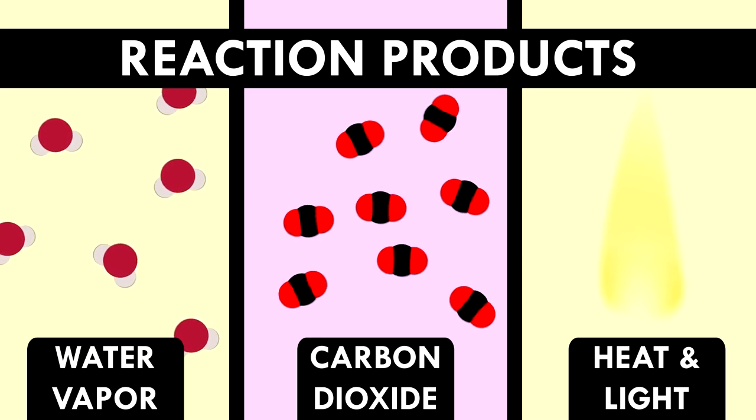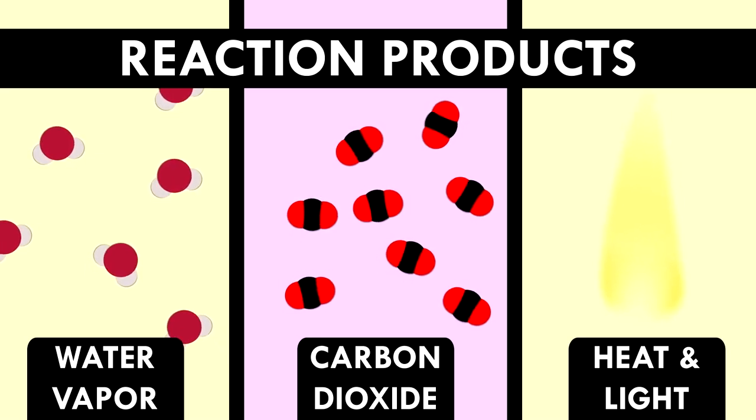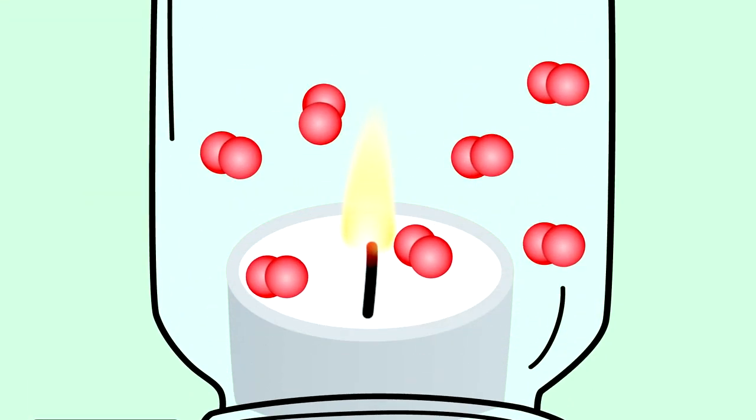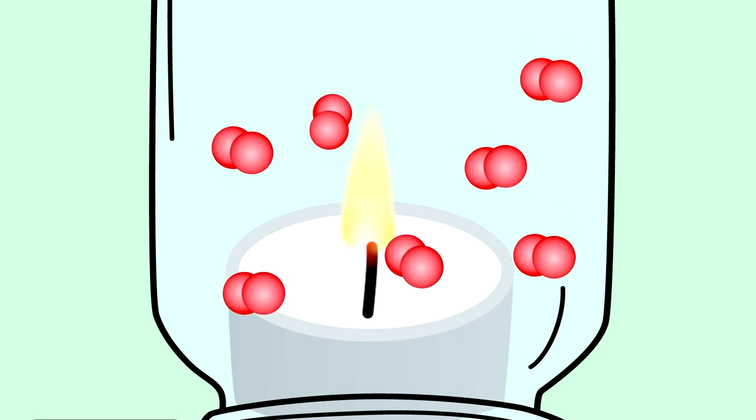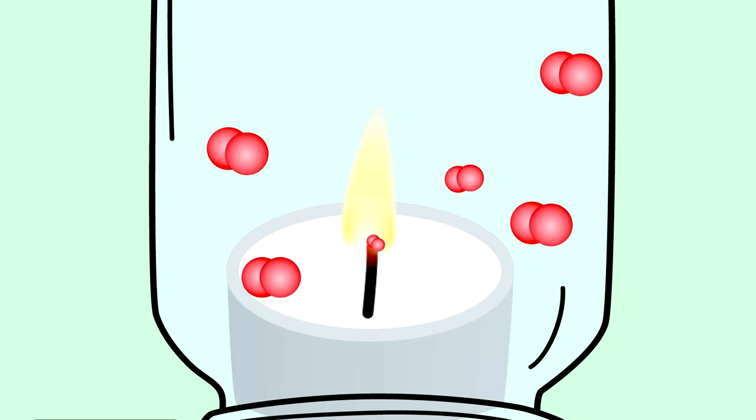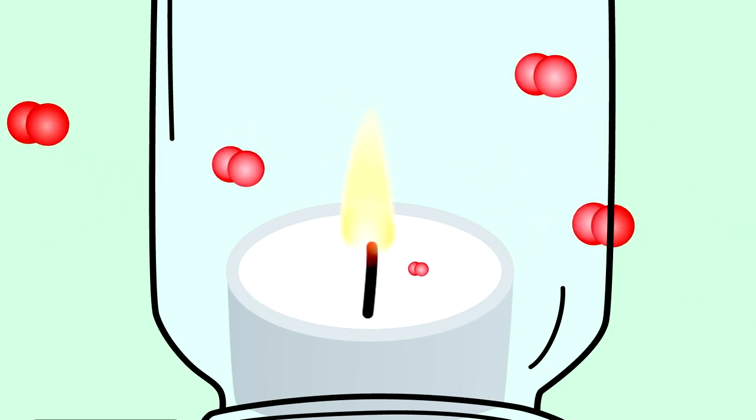It's the energy released from the reaction. So, when you put the jar over the candle, what happens is that the flame uses up the oxygen inside the jar, but then it can't get any more. So, since you need oxygen for the reaction, the flame goes out.